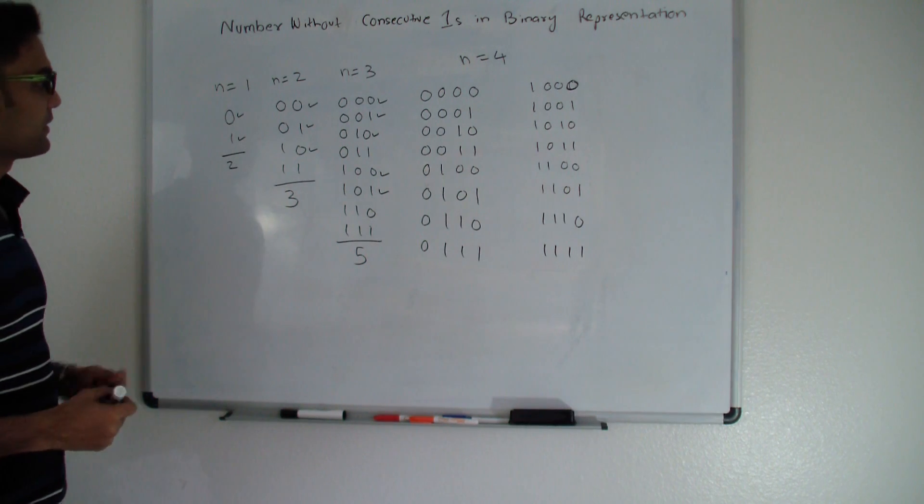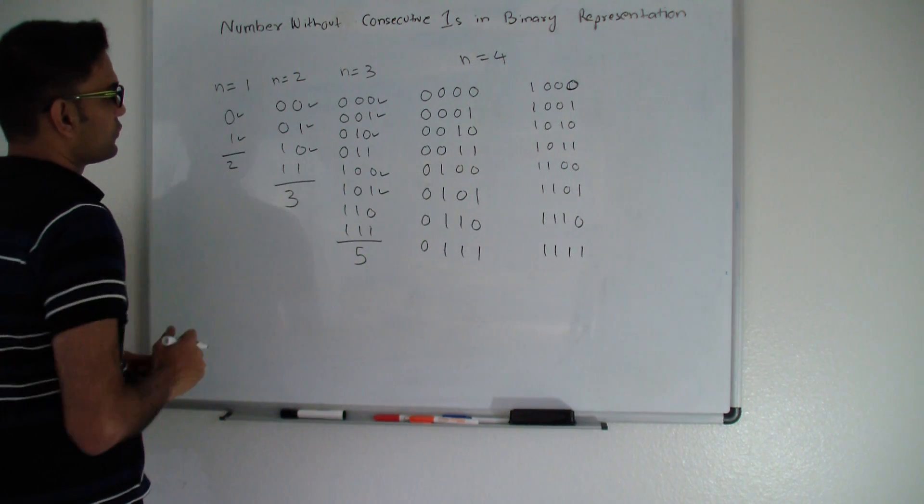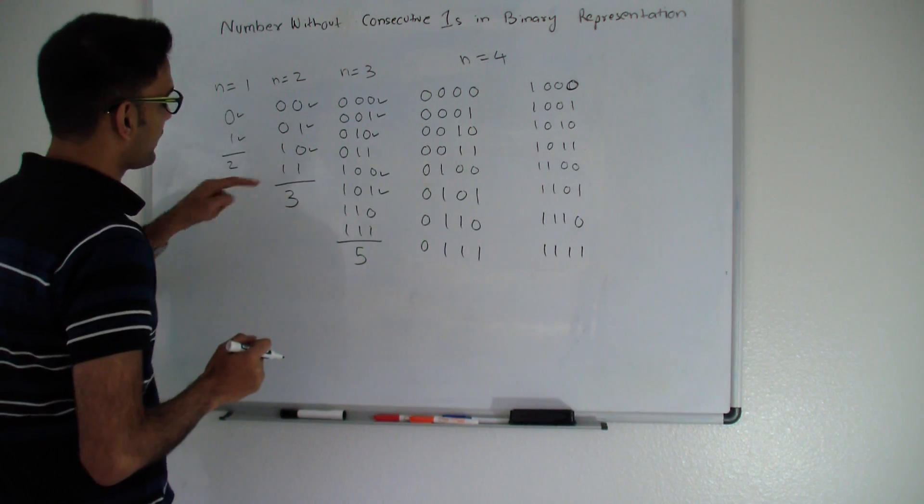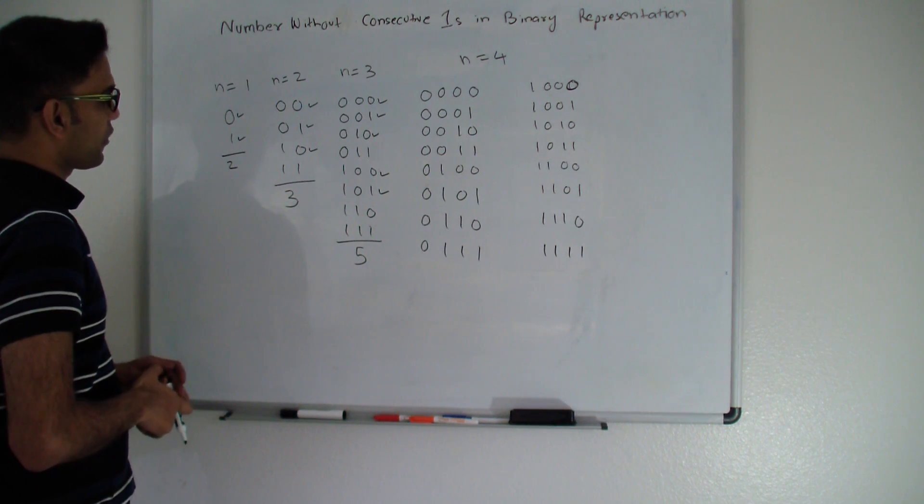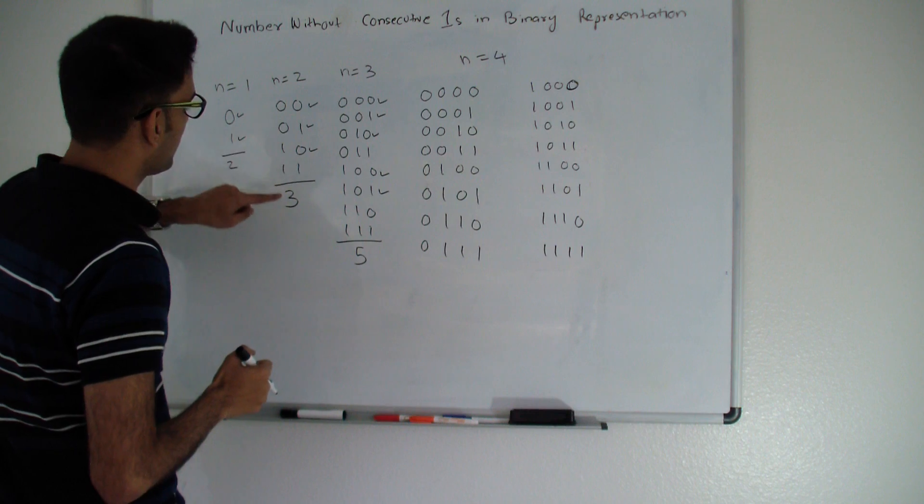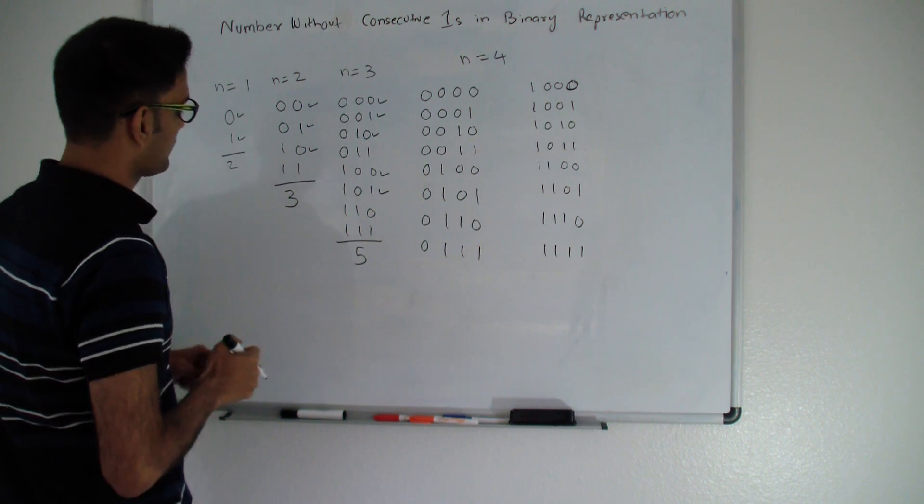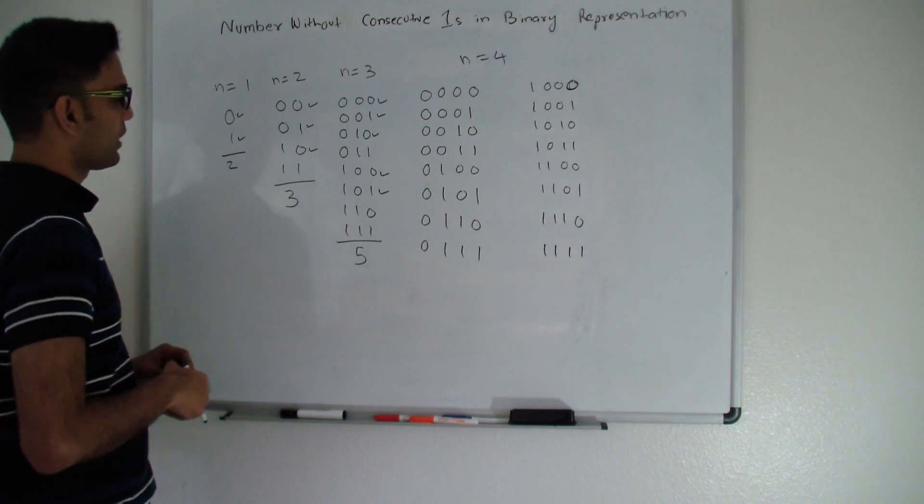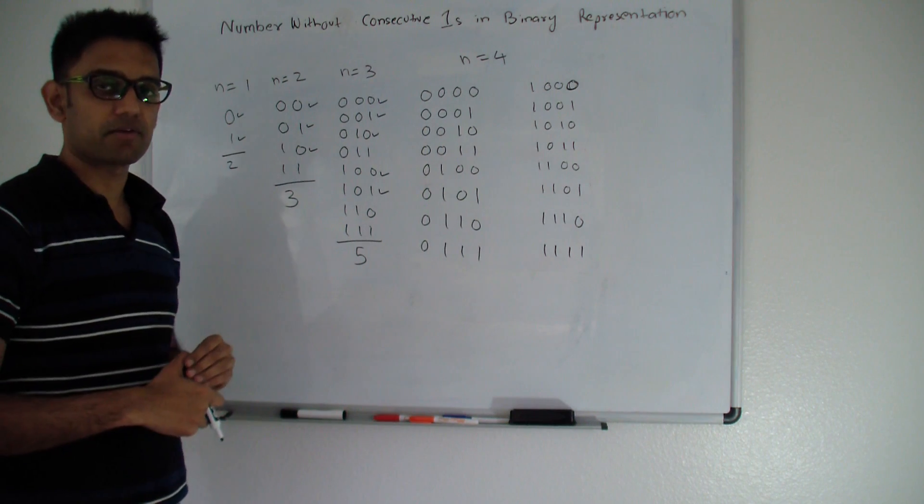For example, here I have n equals 2, so I have numbers from 0 to 3. Let's see how many numbers do not have consecutive ones in their binary representation: 1, 2, and 3. So n equals 2, you should return 3. Notice how this one has 1,1 consecutive ones in their binary representation.